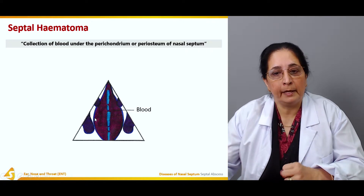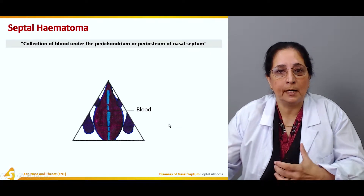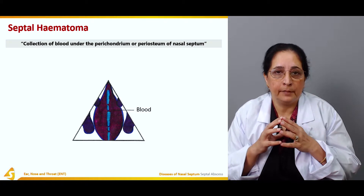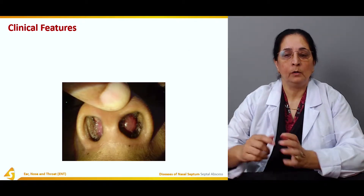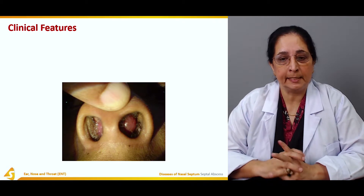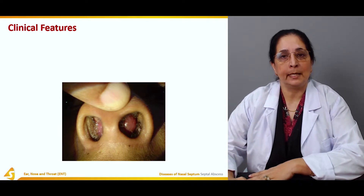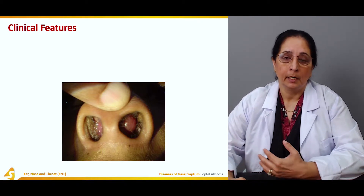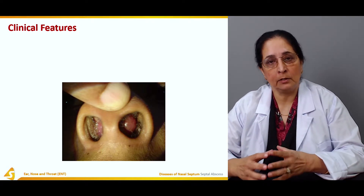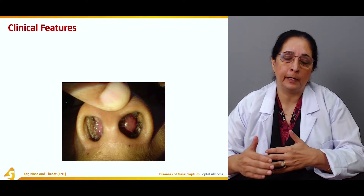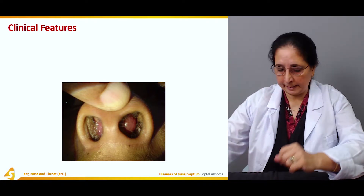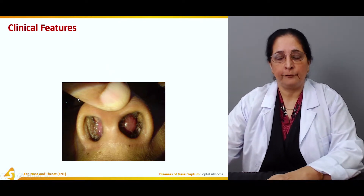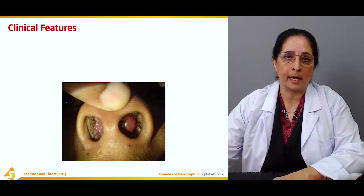Once blood is collected under the perichondrium or periosteum of the nasal septum, it causes swelling of the nose. The main cause of any hematoma or blood collection is trauma to the nose. Now let's talk about the clinical features of septal hematoma — which, again, is the collection of blood in the perichondrial or periosteal region of the septum.